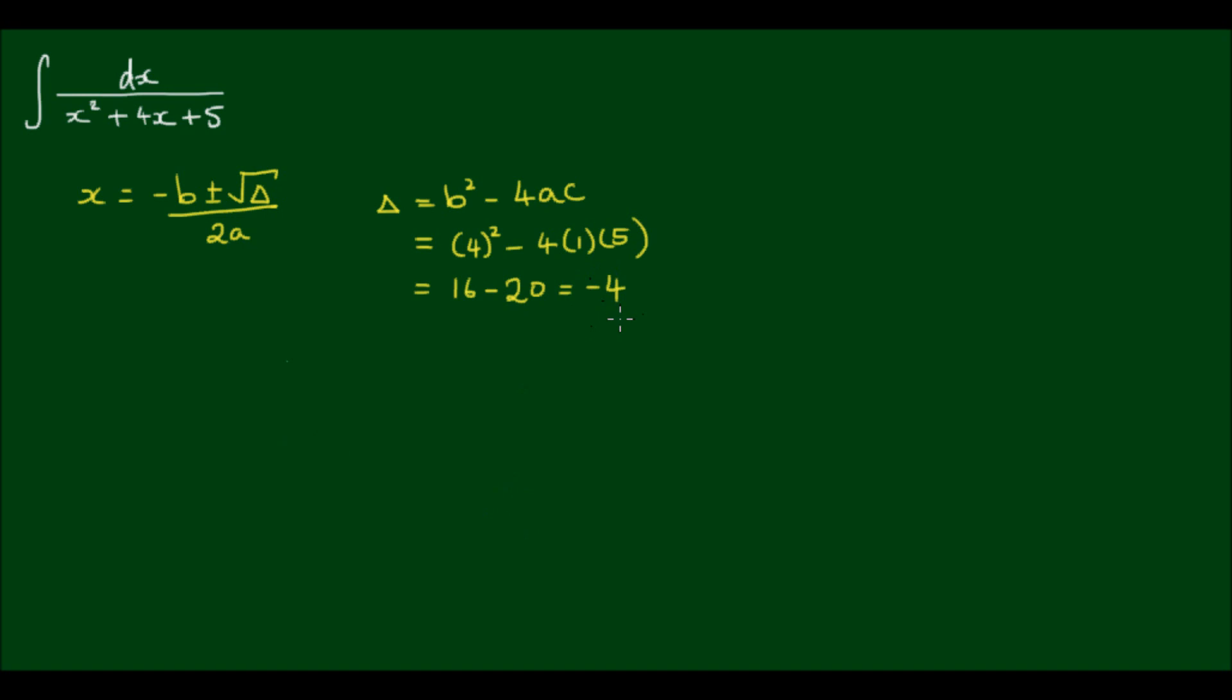So delta is a negative number which means the square root is an imaginary number. And this means we only have complex roots for this quadratic. So this quadratic is not reducible to a multiple of two linear factors. So we call it irreducible. And because it is irreducible we have to use a linear numerator to carry out the partial fraction decomposition.